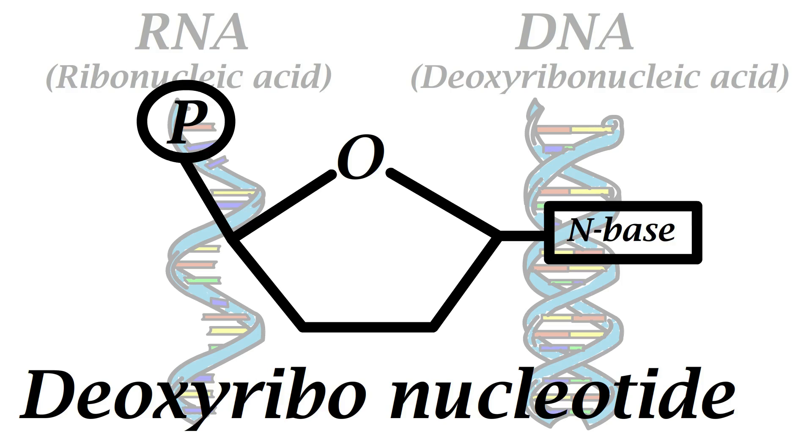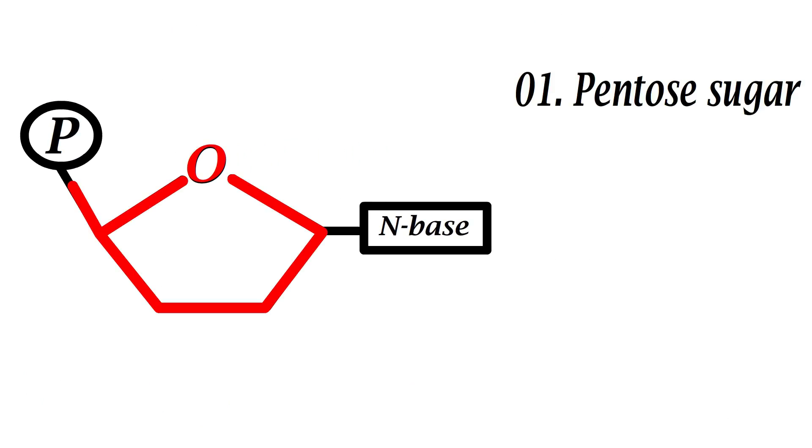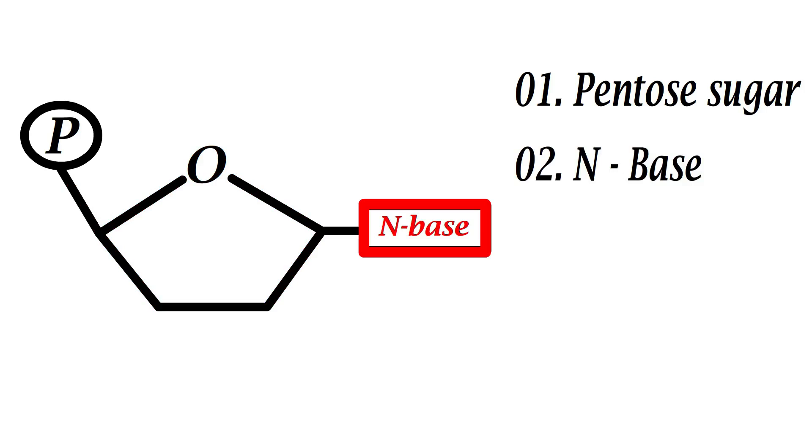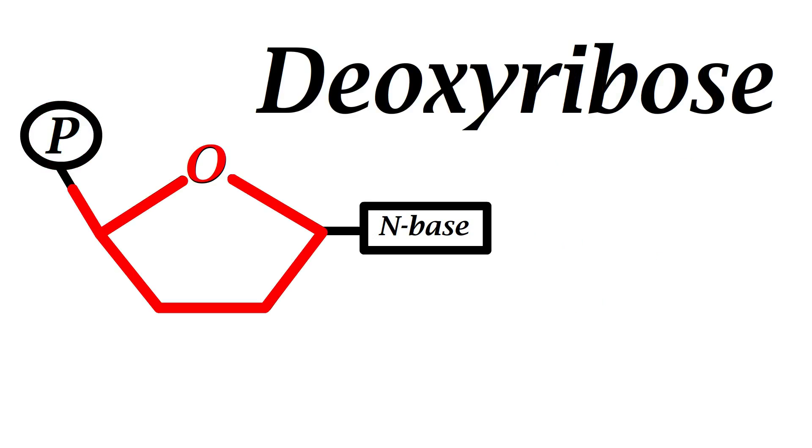A nucleotide is a component which consists of three subunits: a pentose sugar, a nitrogen base, and a phosphorus group.